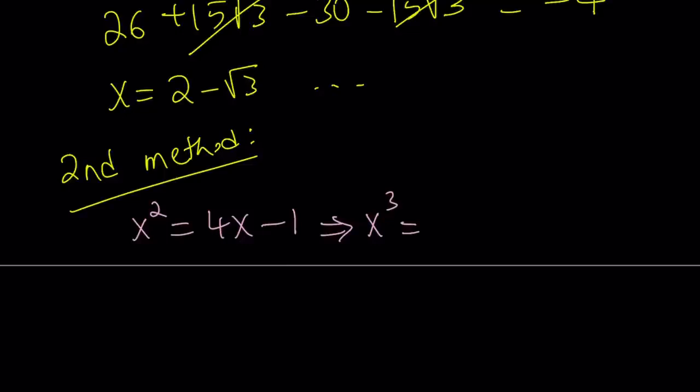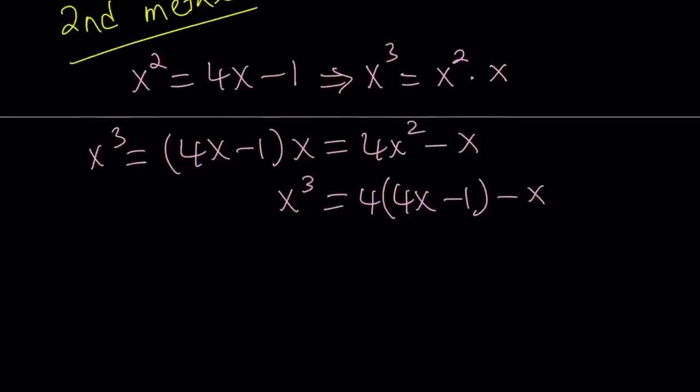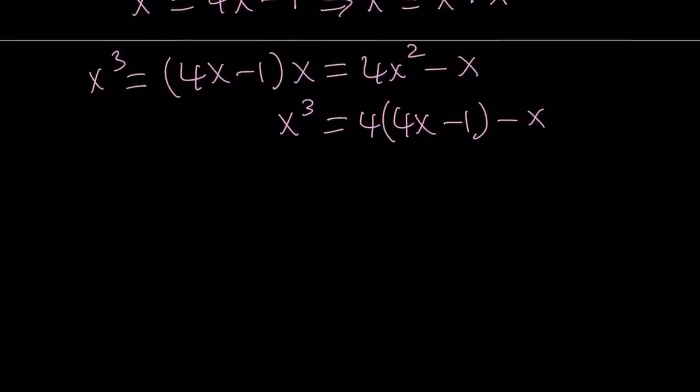So x cubed is x squared times x, but I can go ahead and replace x squared with 4x minus 1. Then distribute, and then replace x squared with 4x minus 1, which is something that you can keep doing by the way. So you can pretty much get all the powers that are greater than or equal to 3 in terms of x as a linear function. So from here we get x cubed equals 16x minus x, which is 15x minus 4.